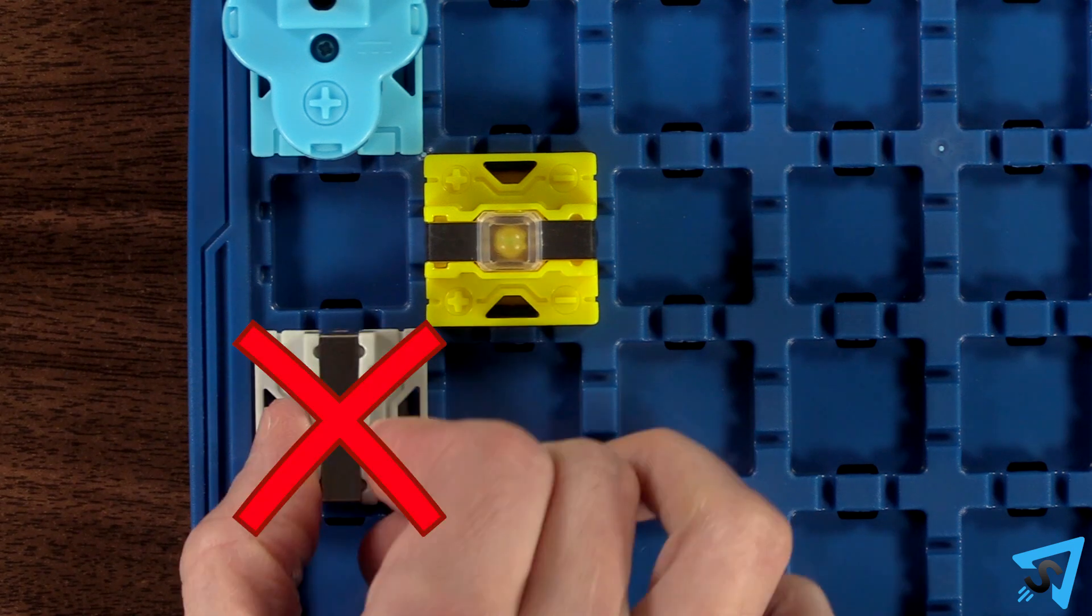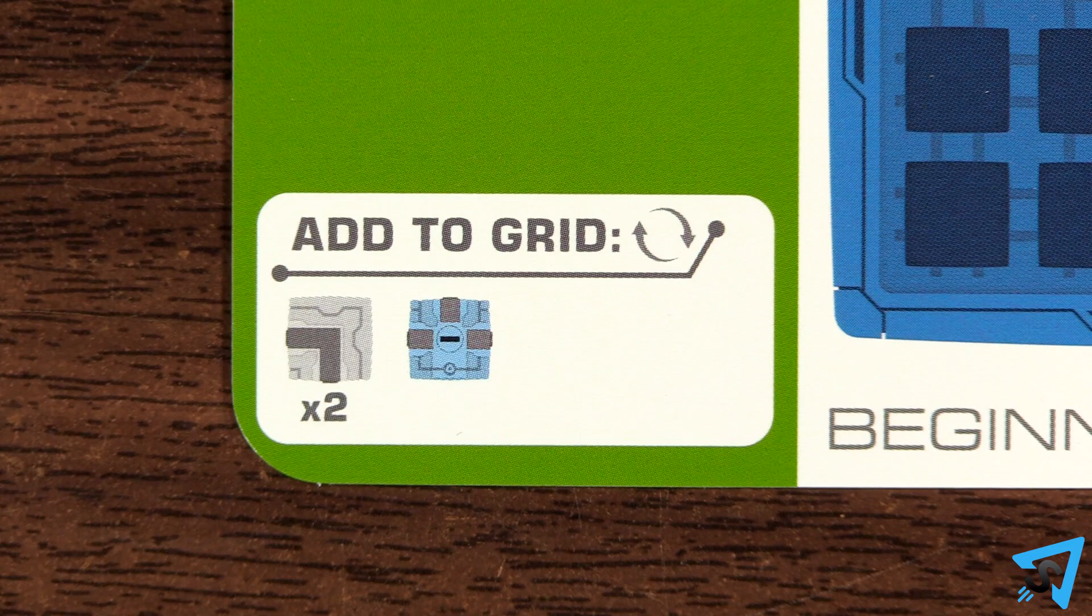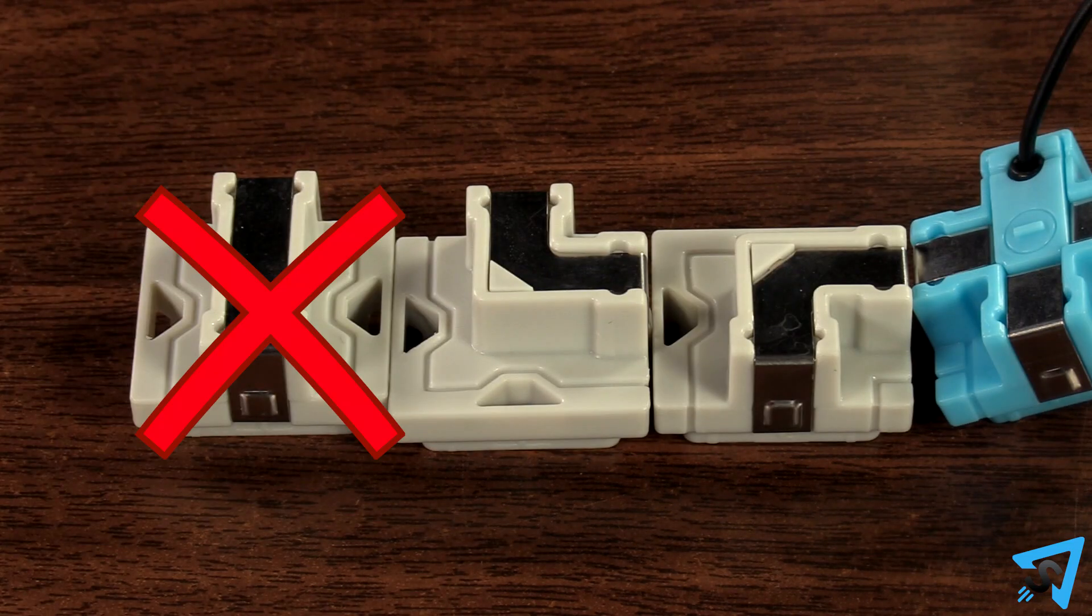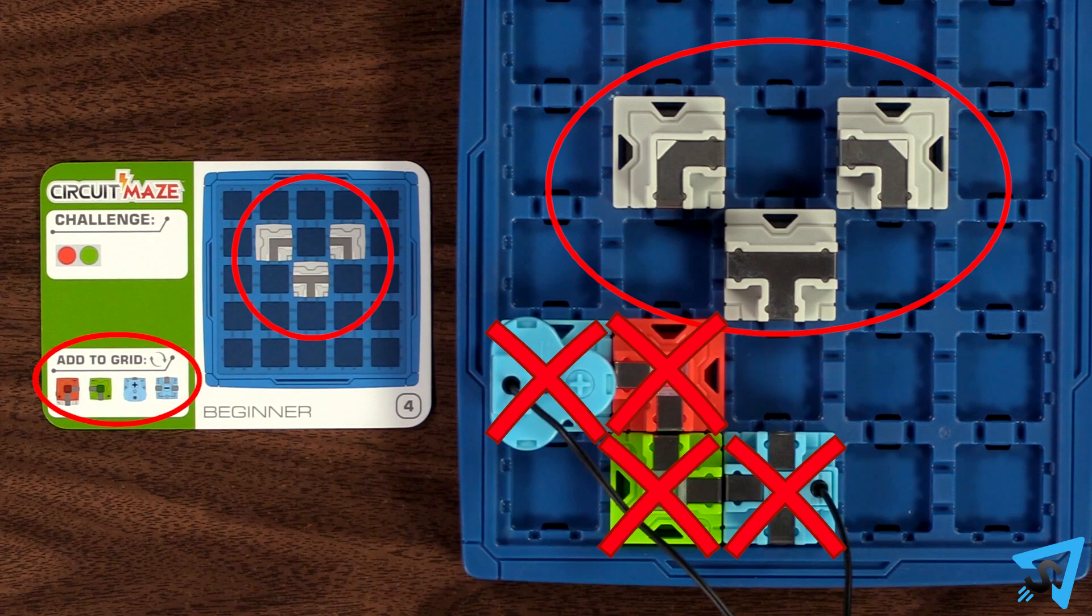The starting tokens may not be moved. In the bottom left of the card is a list of all the tokens you must add to the grid to solve the puzzle. You may not add any more than this, and all the listed tokens must be used.